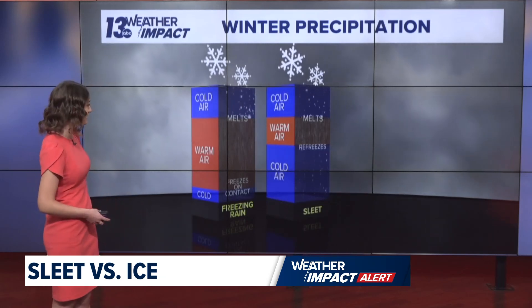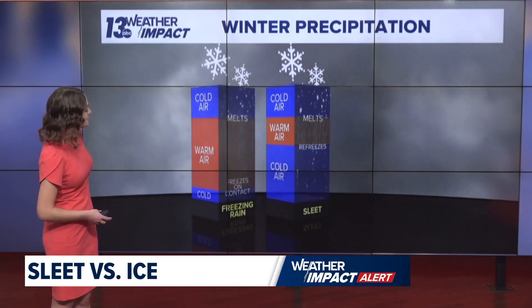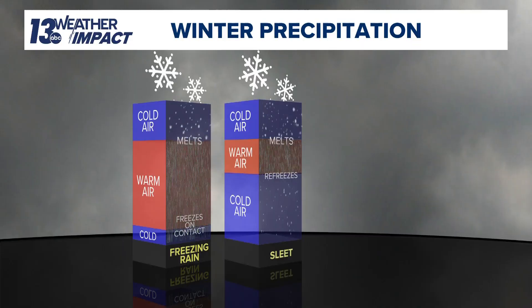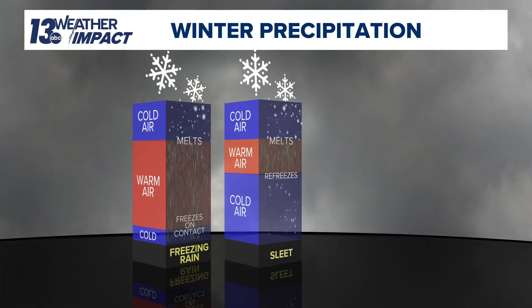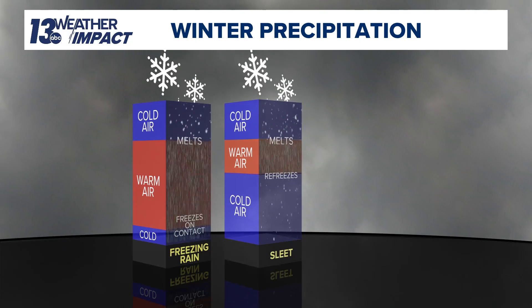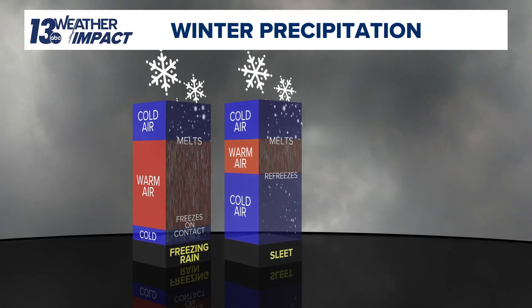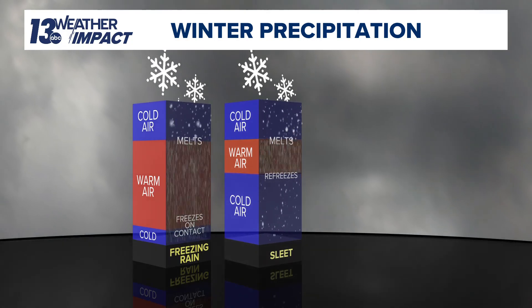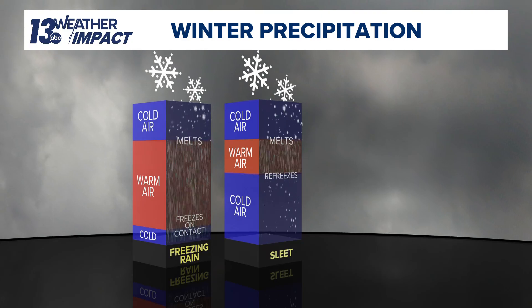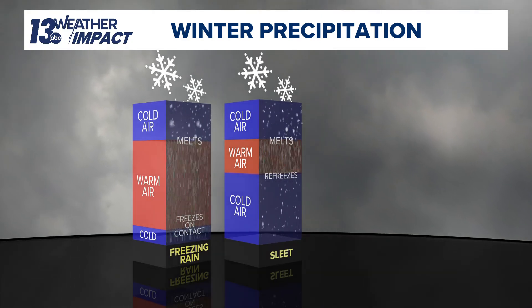Sleet is a little bit different. That warm layer instead is displaced further up in the atmosphere, which makes it more of a wintry precipitation with a bit more of a mix. As we're talking about sleet, it then falls through a lot more cold air, solidifies a bit more, and gives us what we expect when we're talking about sleet.